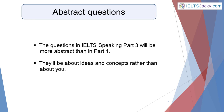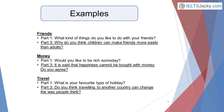The questions in IELTS Speaking part three will be more abstract than in part one — that is, they'll be about ideas and concepts rather than about you. For example, a part one question about friends might be 'What kind of things do you like to do with your friends?' but a part three question could be 'Why do you think children can make friends more easily than adults?' A part one question about money might be 'Would you like to be rich someday?' whereas a part three question would be more like 'It is said that happiness cannot be bought with money — do you agree?'